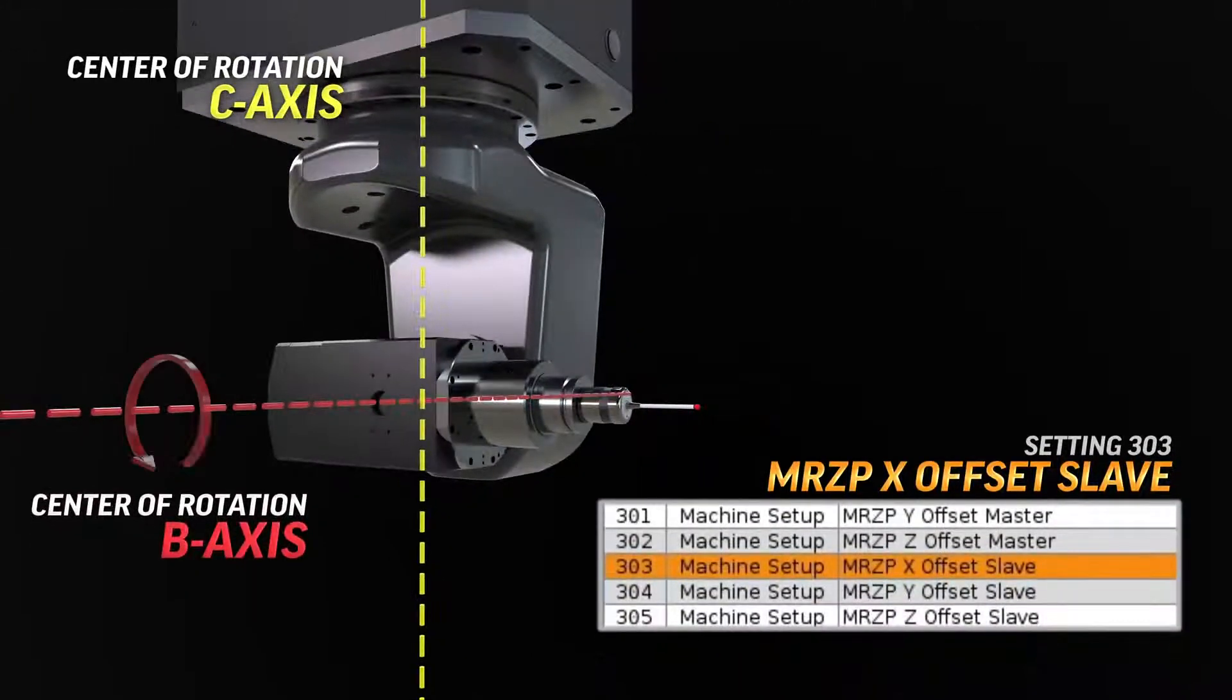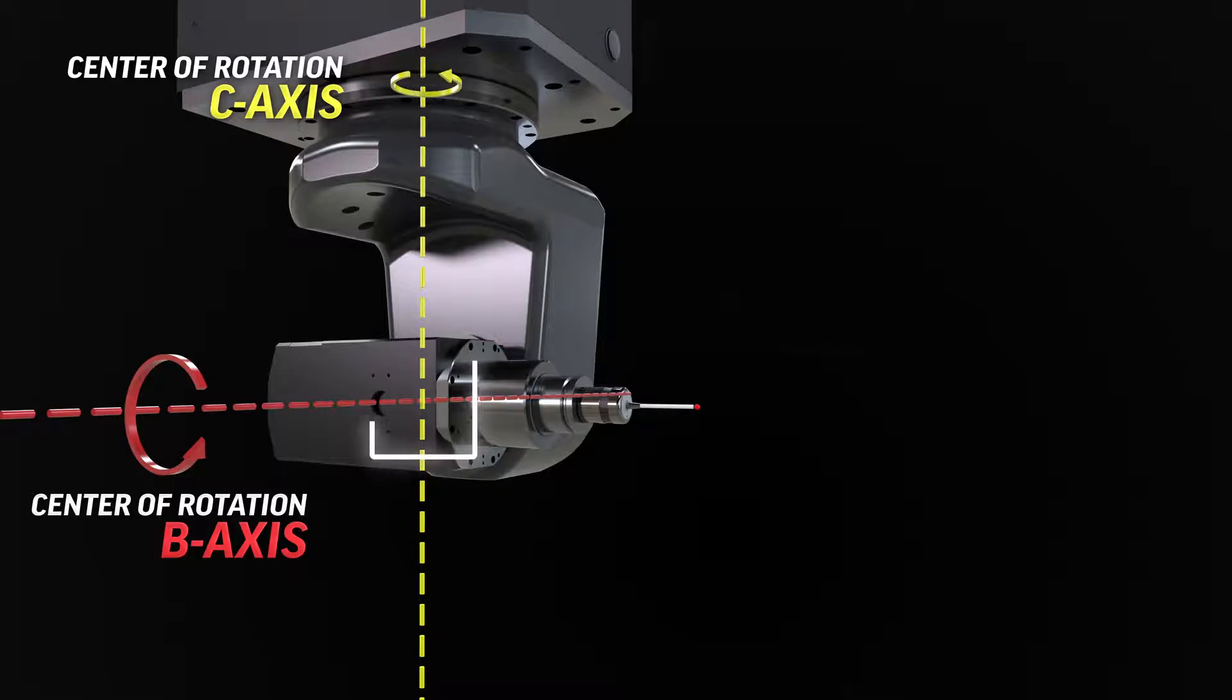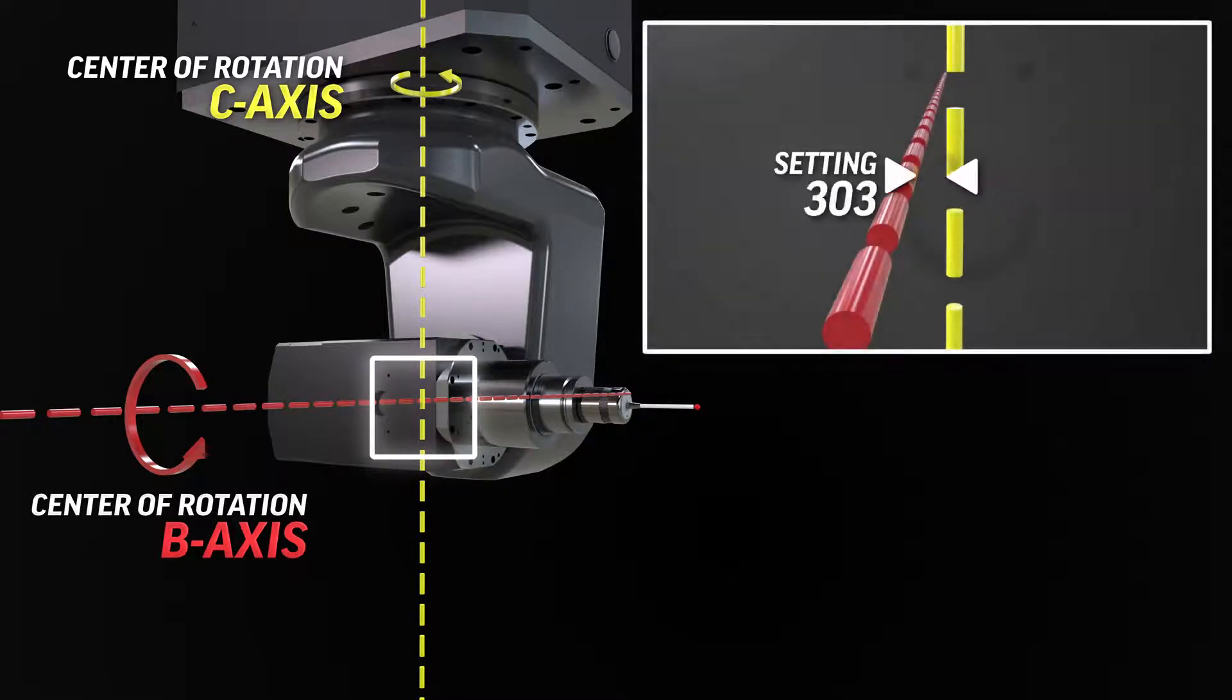It will also set setting 303, which is the MRZP X offset slave. This setting accounts for any deviation at the intersection of the center of the C axis rotary and the center of the B axis rotary.